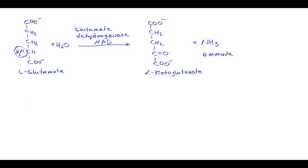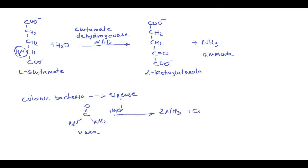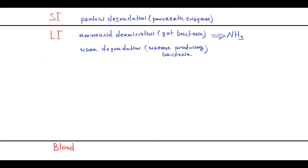In the intestinal lumen, some colonic bacteria produce the enzyme urease, which causes urea degradation into two ammonia molecules and carbon dioxide. These ammonia molecules can freely cross biological membranes, so they diffuse through the intestinal lining into the blood — unless an ammonia molecule captures a hydrogen proton and becomes ammonium, the ionized form of the molecule that is unable to cross biological membranes.